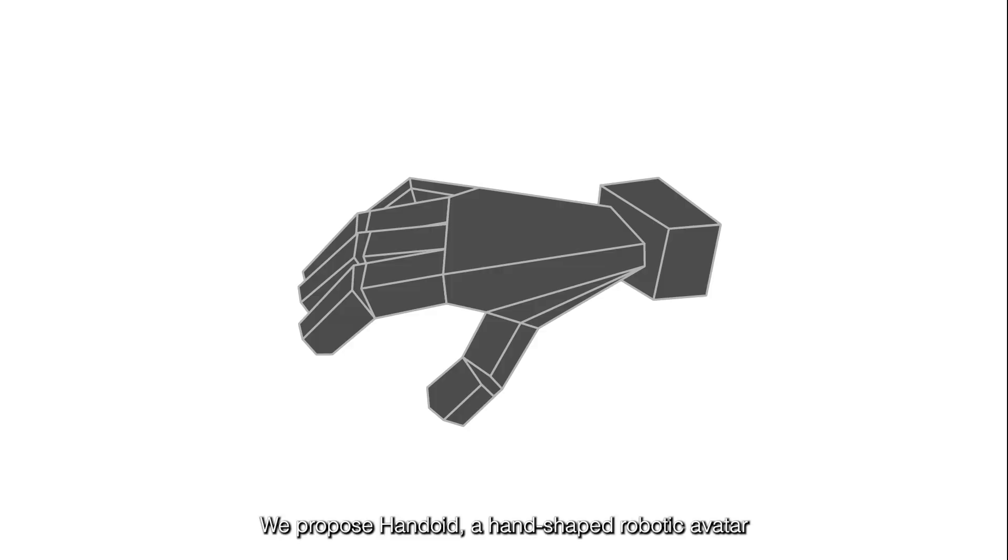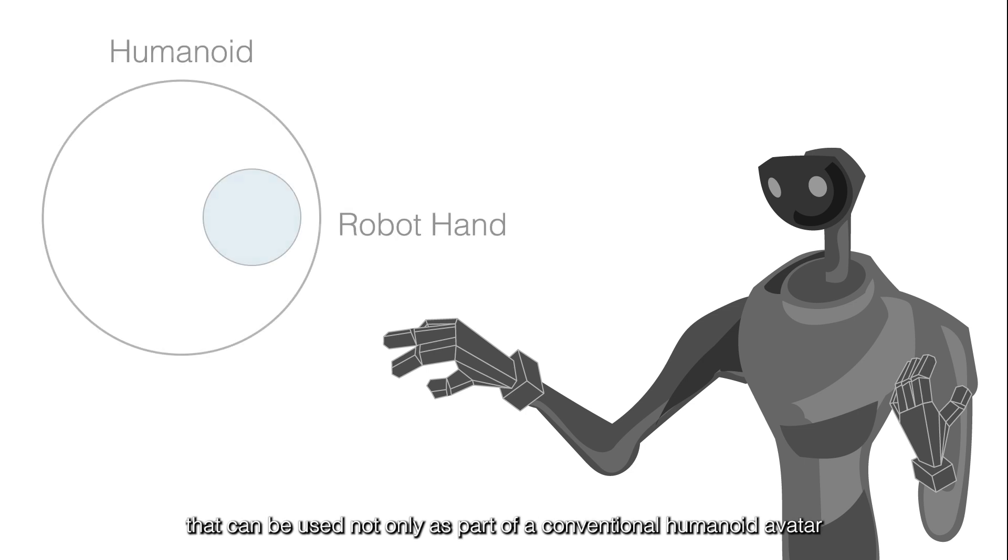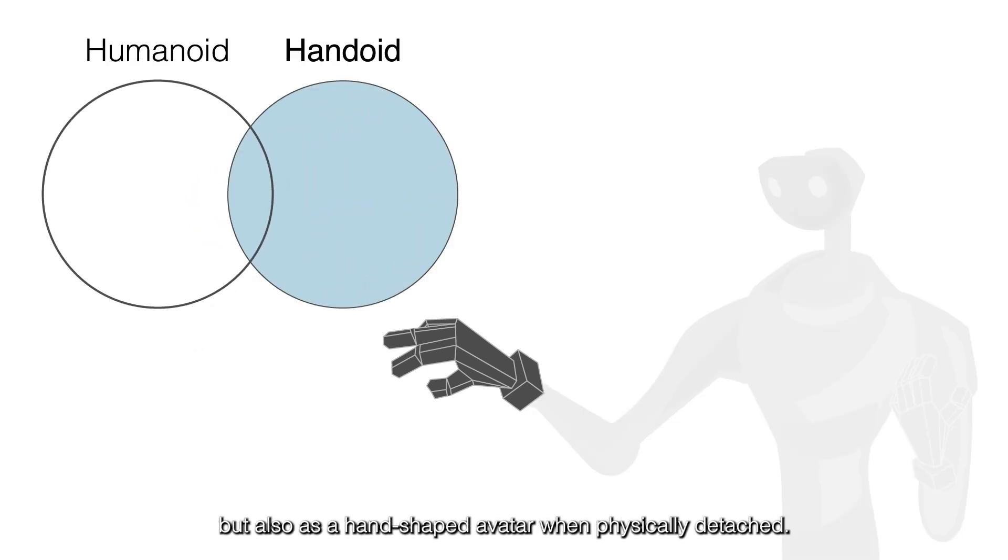We propose Hangoid, a hand-shaped robotic avatar that can be used not only as part of a conventional humanoid avatar but also as a hand-shaped avatar when physically detached.